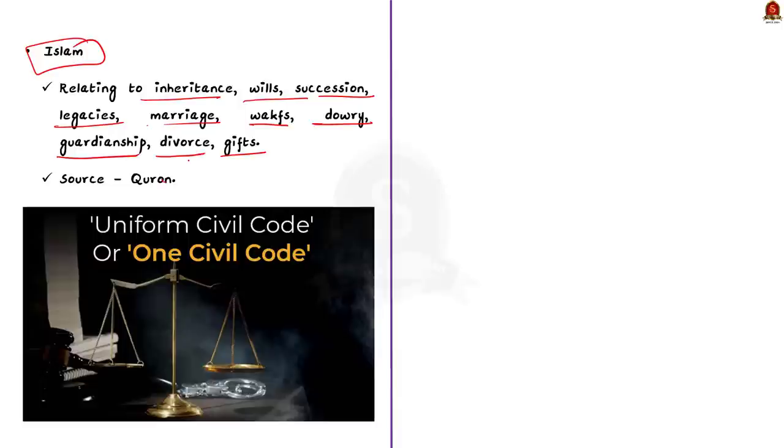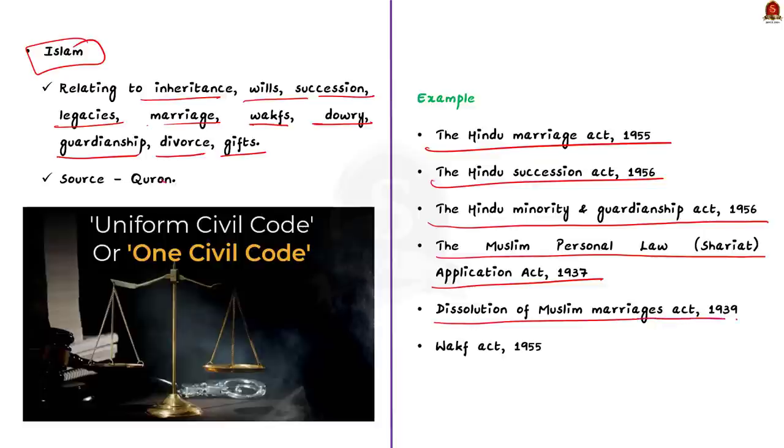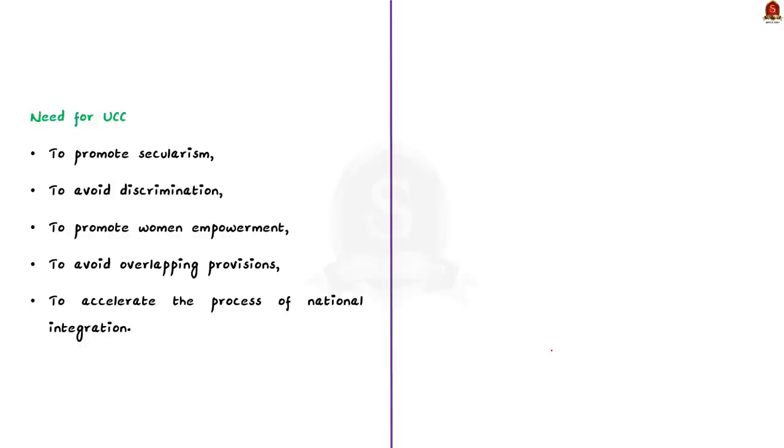There are some other examples of personal laws which includes the Hindu Marriage Act of 1955, Hindu Succession Act of 1956, Hindu Minority and Guardianship Act of 1956, the Muslim Personal Law Application Act of 1937, Dissolution of Muslim Marriages Act of 1939 and we also have Vak Act of 1955. From these examples, what can we infer? We can infer that these are laws existing for personal matters based on religion. But why everyone is talking about Uniform Civil Code and what is the need for Uniform Civil Code in India? The disadvantages of personal laws are the reasons why we need Uniform Civil Code.